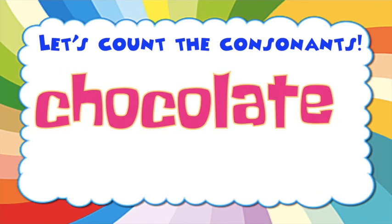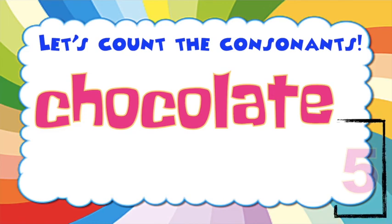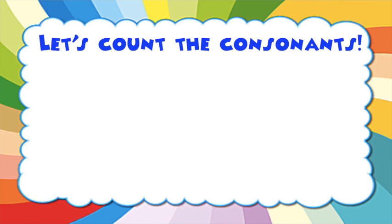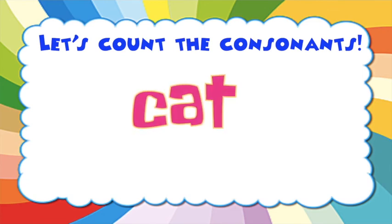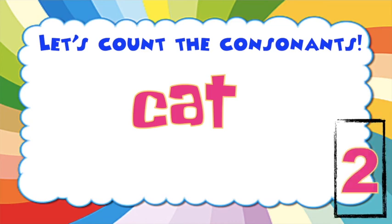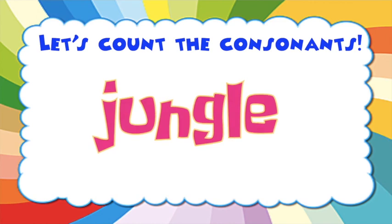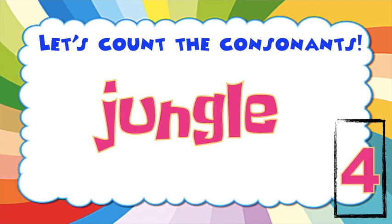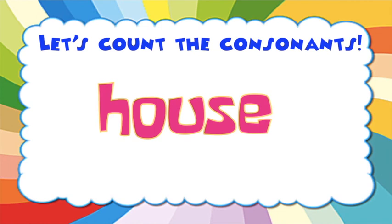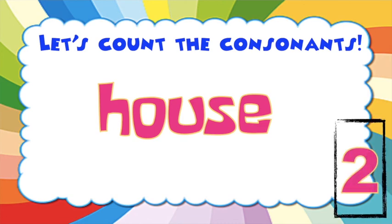How about this one? How many consonants do we have in the word chocolate? Good job, children. We have five consonants. How about the word cat? Very good. We have two consonants. How about the word jungle? Good job, children. We have four consonants. How about the word house? Very good. We have two consonants.